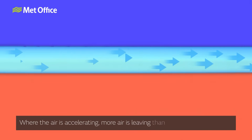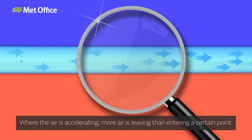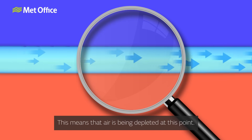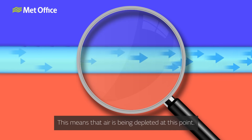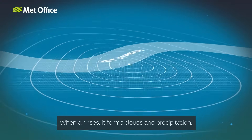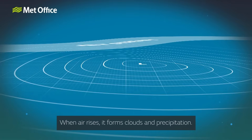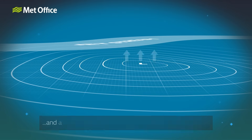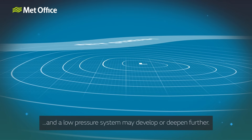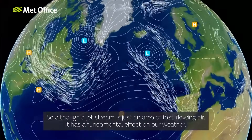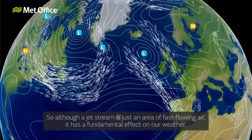Where the air is accelerating, more air is leaving than entering a certain point, meaning that the air is being depleted at this point. To fill this depletion, air from below rises. When air rises it forms clouds and precipitation. Winds at the surface converge to this rising air column, which causes surface pressure to fall, and a low pressure system may develop or deepen further. So whilst a jet stream is just an area of fast-flowing air, it has a fundamental effect on our weather.